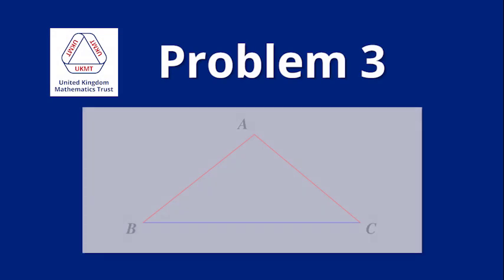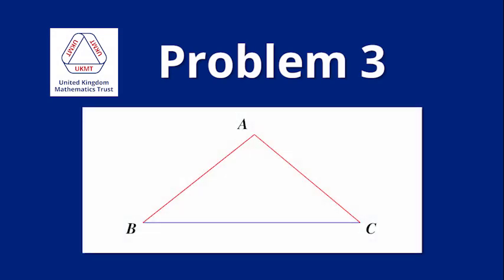Problem 3. The triangle ABC has AB equal to CA, and BC is its longest side.